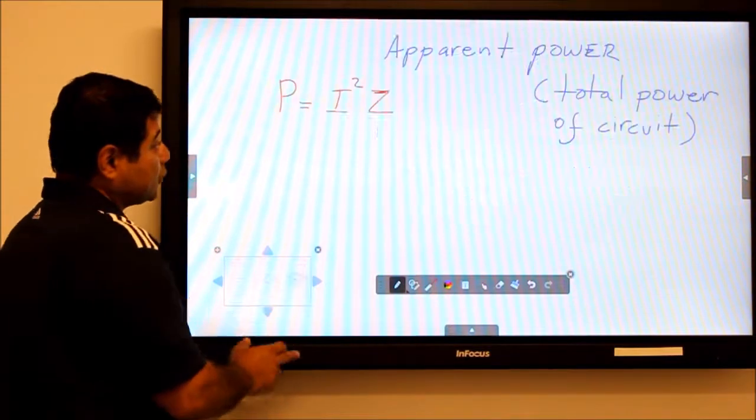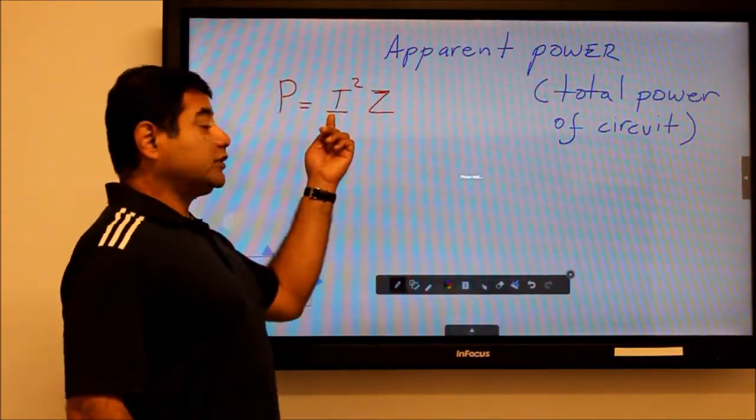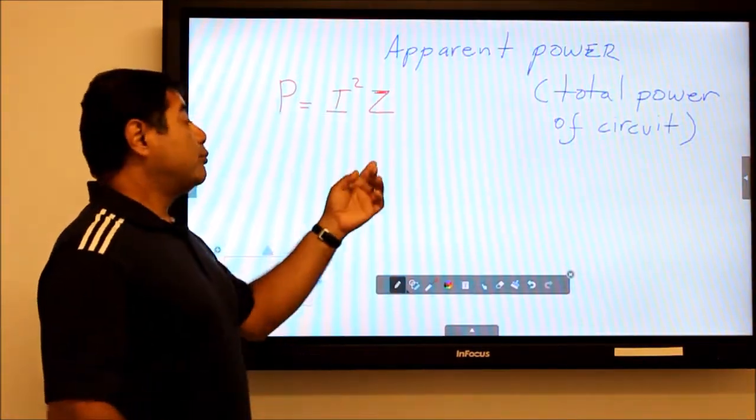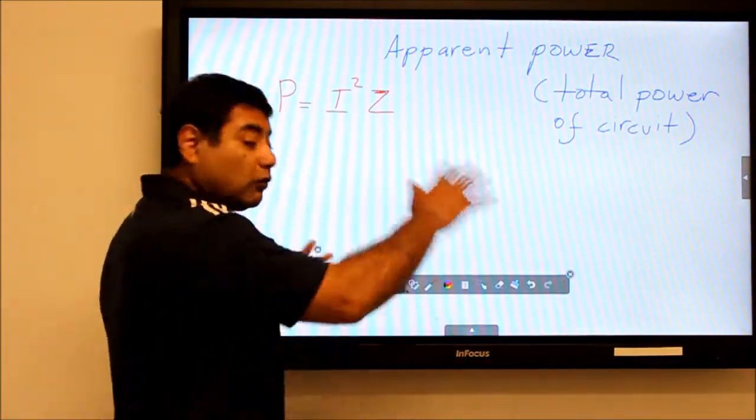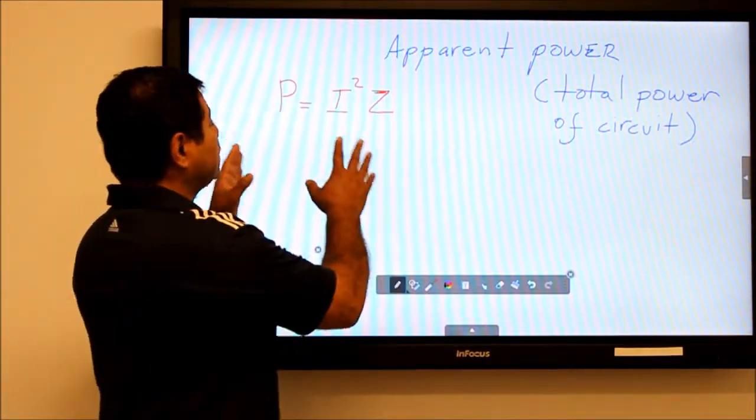Because it's the total power of the circuit, we need the total current of the circuit, and we're going to use the impedance of the circuit, which is the overall resistance, to get the total power.